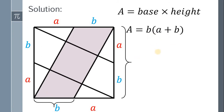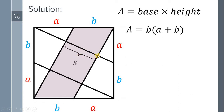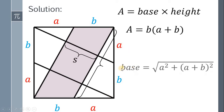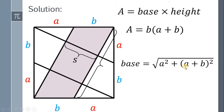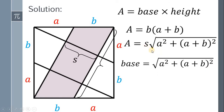Another way to find the area of this parallelogram is to consider the height be the side of this inner square. Let this side equal S, and the base be this side length. To find this base, consider the right triangle with side lengths A and (A plus B). Using the Pythagorean theorem, the base equals the square root of A squared plus (A plus B) squared. Therefore, the area of this parallelogram is S multiplied by the square root of A squared plus (A plus B) squared.